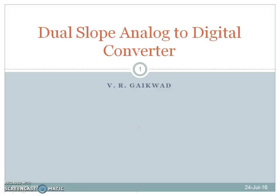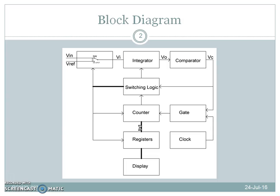This video explains the operation, analysis, and design of a dual slope analog to digital converter. A dual slope ADC is a classical example of a mixed signal processing system. Depending on the type of signal processed by a block, its block diagram can be divided into two sections: an analog section and a digital section.